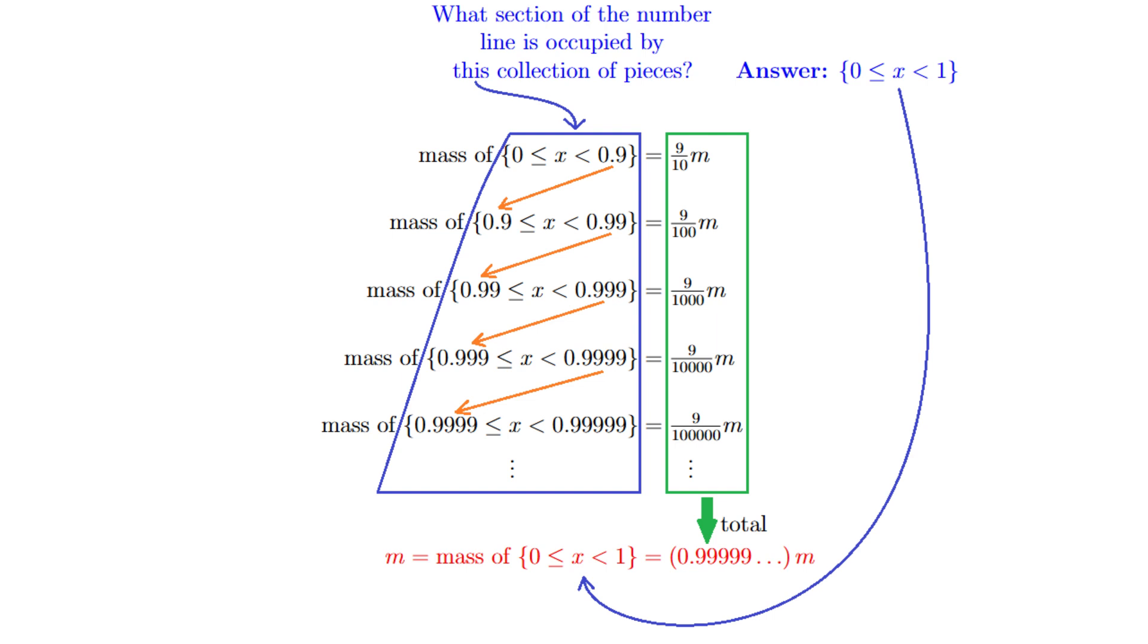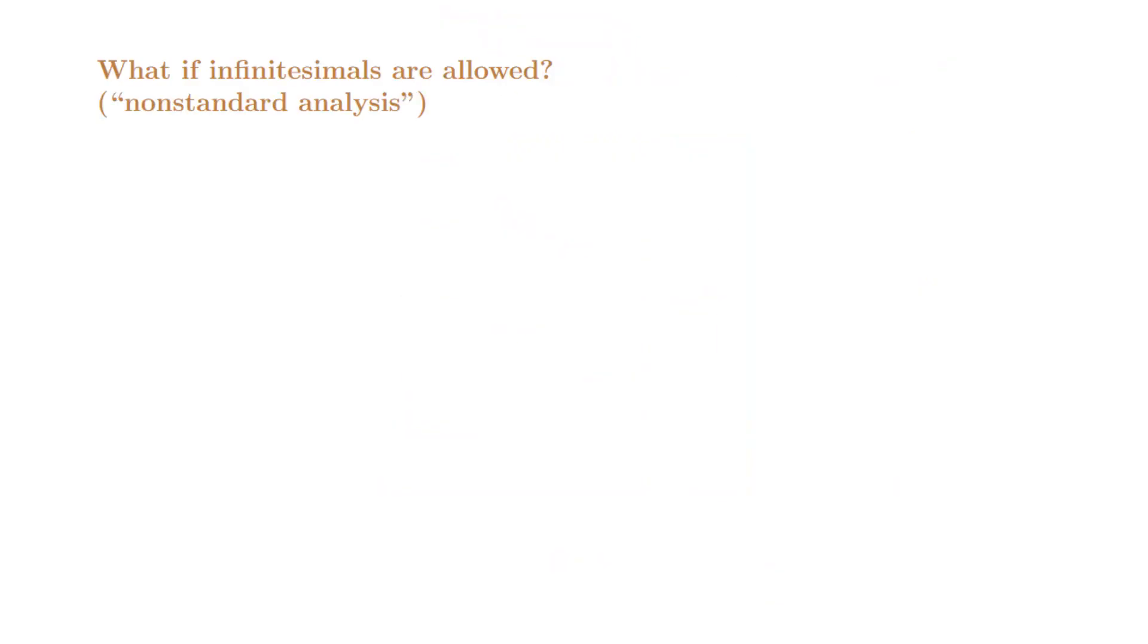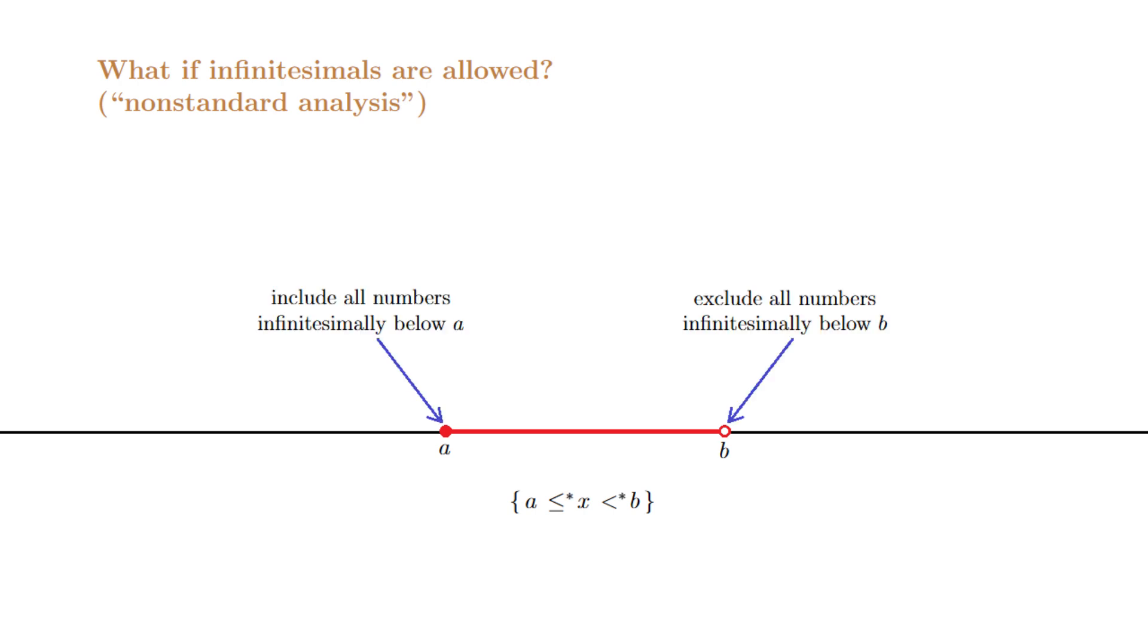Now some of the particularly nerdy types among you might be thinking, what happens if we work in a number system where we allow the existence of infinitesimal discrepancies between positions on the number line? Well infinitesimals are a rather dodgy business, but what we could do is to say, for each of our stretches of the number line defined by the inclusion of a lower boundary value and the exclusion of an upper boundary value, let's simply also include all the numbers that are infinitesimally below the lower boundary value, while at the same time also excluding all the numbers that are infinitesimally below the upper boundary value. And by doing this, all of the arguments that I presented in this video will still go through in the same way as they did already.